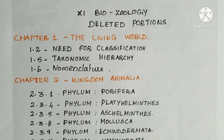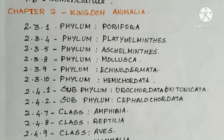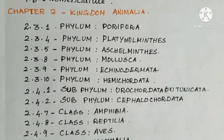Chapter 2: Kingdom Animalia — 2.3.1 Phylum Porifera, 2.3.4 Phylum Platyhelminthes, 2.3.5 Phylum Aschelminthes, 2.3.8 Phylum Mollusca, 2.3.9 Phylum Echinodermata, 2.3.10 Phylum Hemichordata, 2.4.1 Subphylum Urochordata or Tunicata, 2.4.2 Subphylum Cephalochordata, 2.4.7 Class Amphibia.